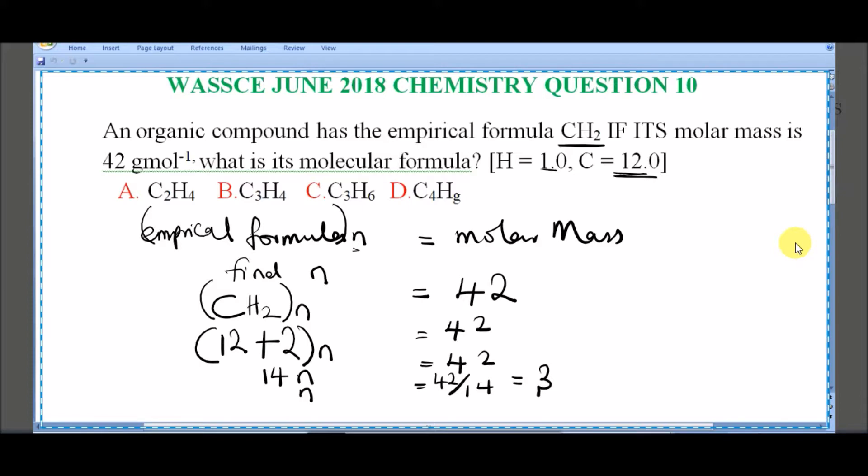We already know that empirical formula times N is equal to molar mass. You also note that empirical formula times N is also equal to molecular formula. So what is the empirical formula now? The empirical formula given is CH2. You can see it here.